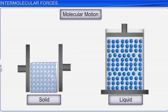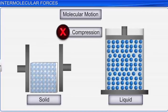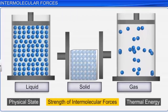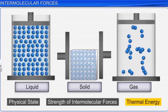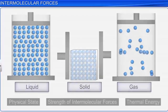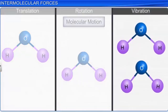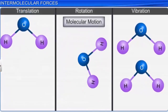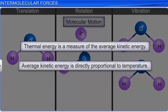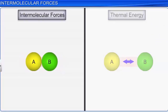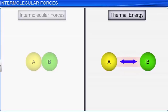The physical state of a substance not only depends on the strength of intermolecular forces that exist between its atoms or molecules, but also on the thermal energy of atoms or molecules. The energy of a body arising from the translational, rotational, or vibrational motion of its atoms or molecules is called the thermal energy. It is the measure of the average kinetic energy of the constituents of the matter and is directly proportional to the temperature of the substance. The balance between the intermolecular forces and the thermal energy of the molecules is responsible for the physical state of matter.